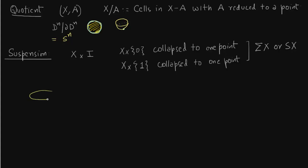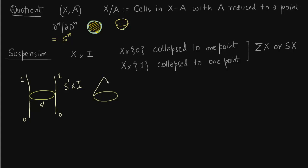For example, take S¹ times I — we draw S¹ and the interval from 0 to 1. Let us write this down: S¹ times the interval. Now collapse the top part and the bottom part. The top part is X times 1 and the bottom part is X times 0, which is collapsed. The top part is collapsed to a single point.